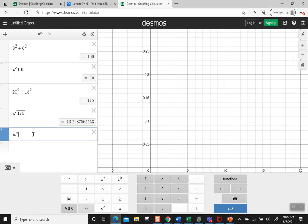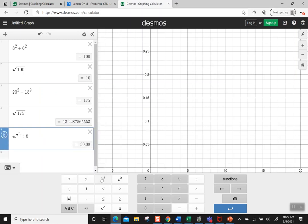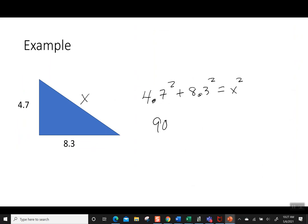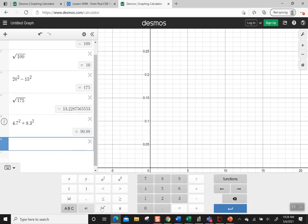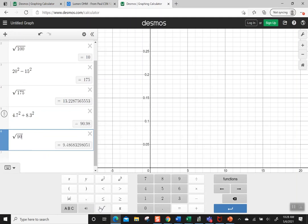So I have 4.7 squared plus 8.3 squared, and it says 90.98. So we have 90.98. Hopefully by now you're starting to get the idea of what we're going to do. We're going to take the square root.